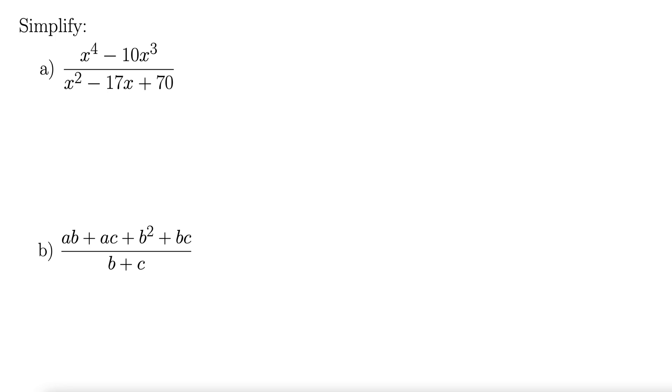For this example, we aim to simplify a few rational functions. The first one is x to the fourth minus 10x cubed divided by x squared minus 17x plus 70. Well, the first step with this kind of thing is always to factor.